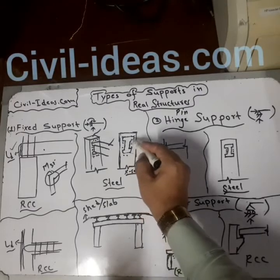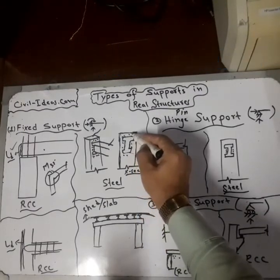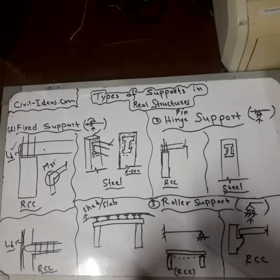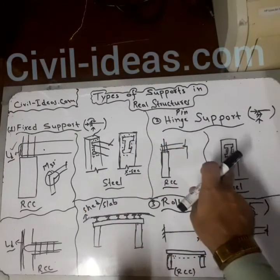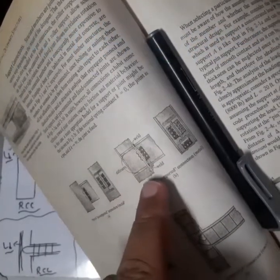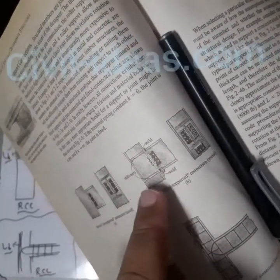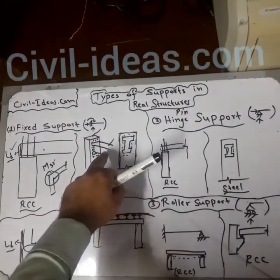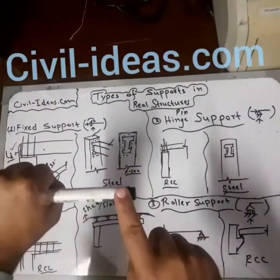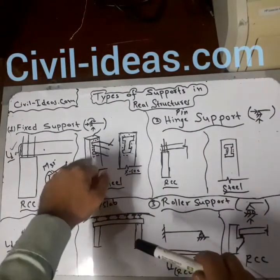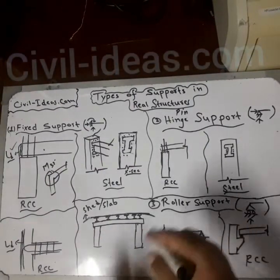A proper end plate is provided on the upper and lower sides, and bolts are provided at the top, bottom, and middle with a proper stiffener. This makes it a fixed support because it transfers the moment — it holds the beam properly to the column and transfers all loads to the column.